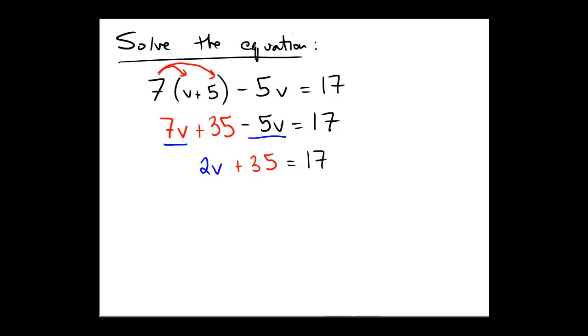And now we're down to a standard two-step equation. We're going to have to cancel out or eliminate the adding of 35, which would be done with its inverse operation. The inverse of addition is subtraction.